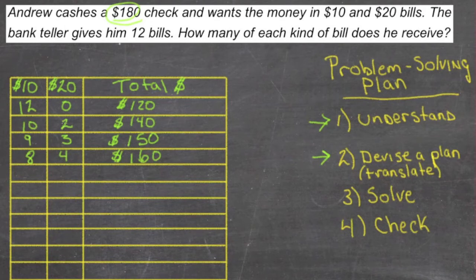Because we went from 10 down to 9 and 2 up to 3, we went from 140 to 150. We went from 9 to 8 and up from 3 to 4, we went from 150 to 160.